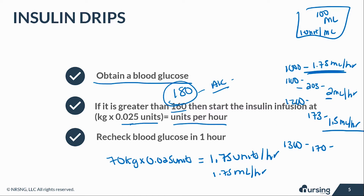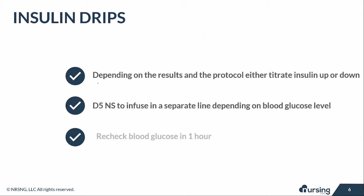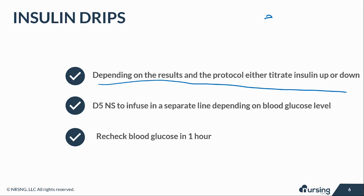Check your facility protocol because it is very detailed and lays out exactly how to adjust that insulin. One piece of advice: protocols usually say check blood glucose every hour, but when you first start an IV insulin infusion, check it a little more often just to make sure you're not dropping that blood sugar too quickly. Depending on the results and protocol, titrate insulin up or down throughout the entire day, until the level stays stable and you don't have to adjust anymore.